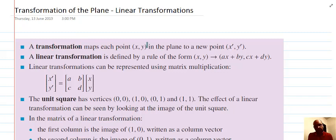Getting to some basic definitions first that we need to note. A transformation maps each point, Cartesian (x,y), in the plane to a new point which we call (x',y'). A linear transformation is defined by a rule. Because we're talking x,y, the rule will be in this form.